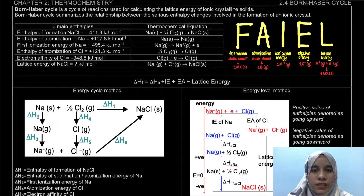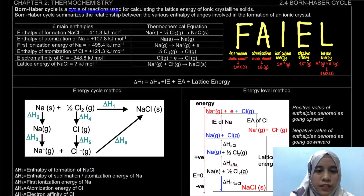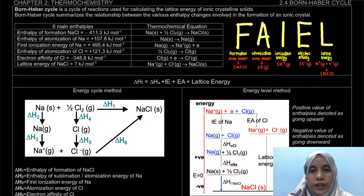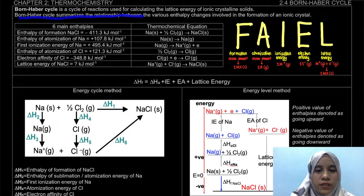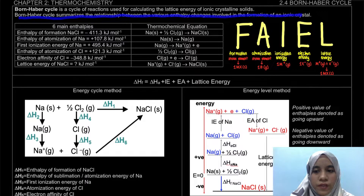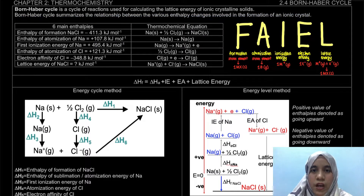So what is actually a Born-Haber Cycle? It is a cycle of reactions used to calculate the lattice energy of an ionic crystalline solid. The Born-Haber Cycle summarizes the relationship between the various enthalpy changes involved in the formation of an ionic crystal.